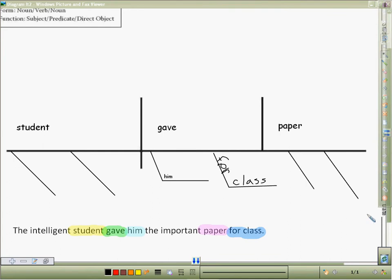The next thing that we're looking at is our adjectives. Which one, what kind, and how many. The and intelligent describe what kind of student. So we need to put what kind of student underneath student. The intelligent. And then we have the and important. That tells, again, what kind of paper. So it goes underneath paper.